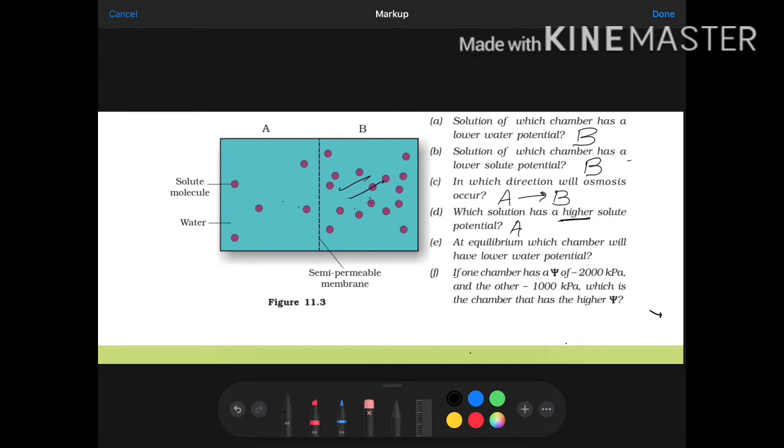If you see B and T, then we will take two straight. Next question. At equilibrium, which chamber will have lower water potential? Not at all. Next.